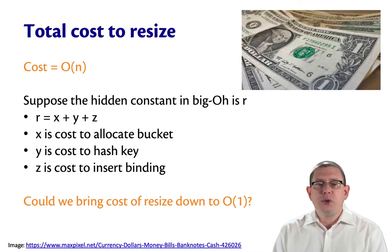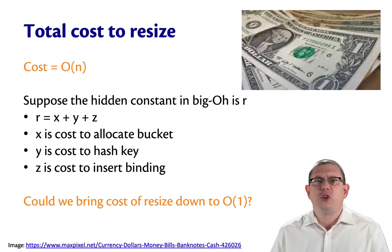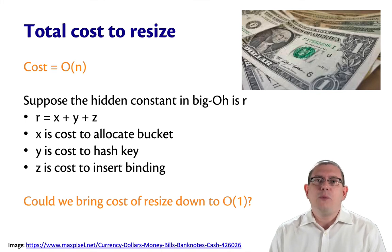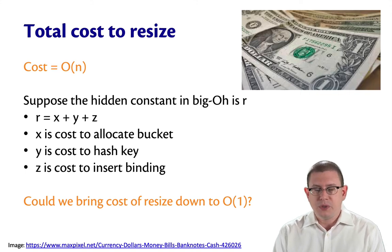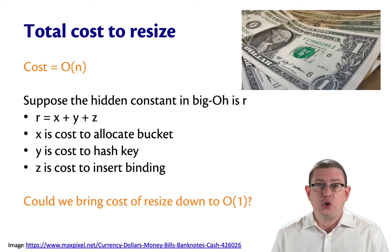It'll help if for a moment we think about that constant, which we don't usually do. Let's suppose that the hidden constant in this particular big O expression, which is the cost to resize, is actually R. So, I've chosen R there to represent resize. It will further help if, just for a minute, we break down R into some pieces. I'm going to break it down into three pieces. I'm going to say R is x plus y plus z. Now, this is just conceptually to help us think about this.